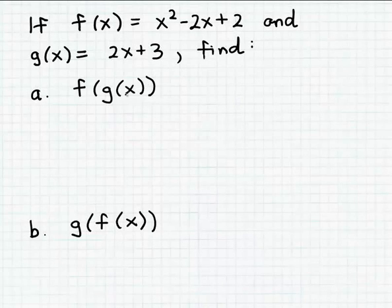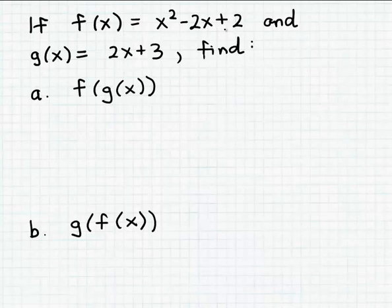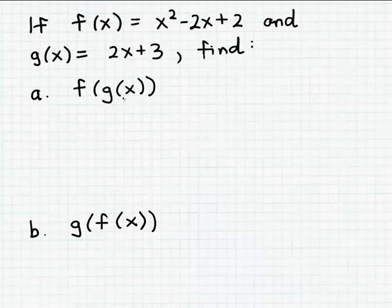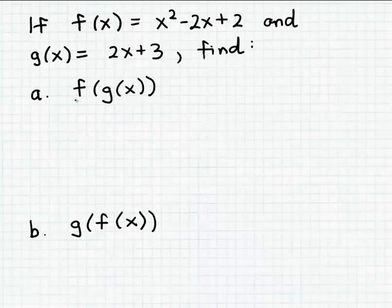In this problem we're going to look at a couple of examples of using the output from one function as input to another function. This process is known as composition. We're given two functions represented by formulas: the function f and the function g. Starting with part a, we want to evaluate the expression f of g of x, which means we're going to use the output from function g as input to function f.